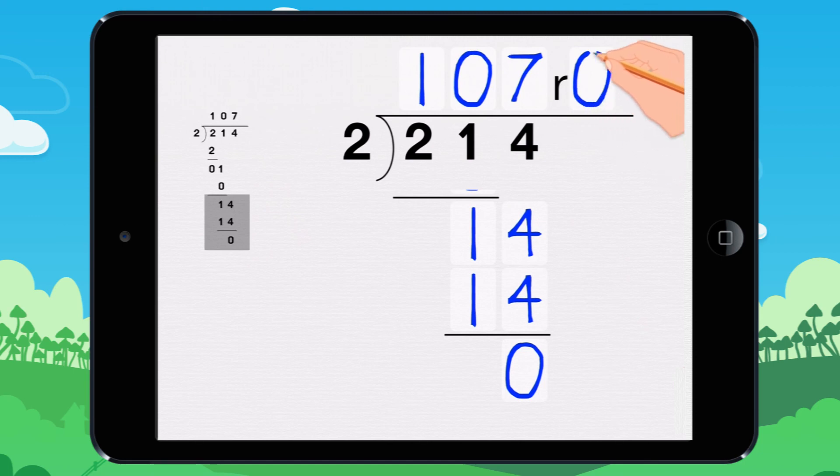Bring up the final remainder and put it out of the R. 214 divided by 2 equals 107.